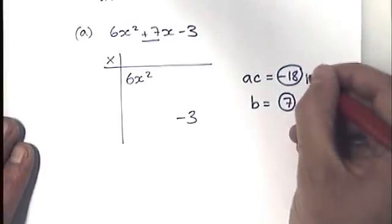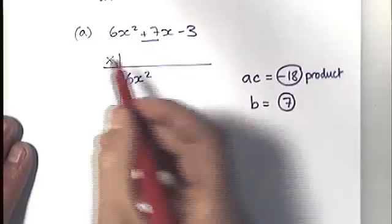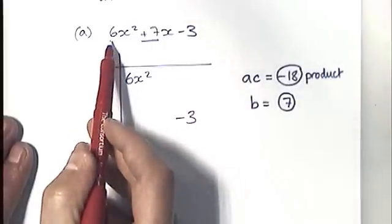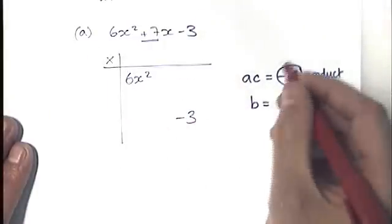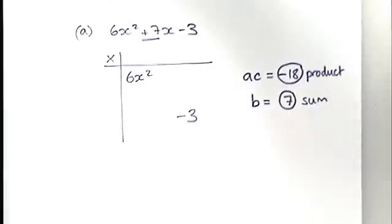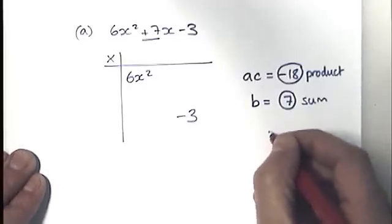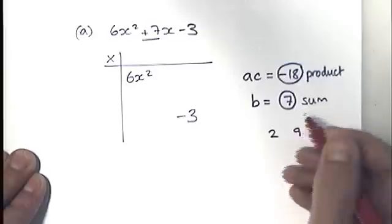Now, this is the bit which is familiar to people who have factorised quadratics where a is equal to 1. You're going to look for two numbers which have a product of negative 18 and a sum of 7. That's quite simple. For example, you just start listing things that multiply to make 18, like 2 and 9.